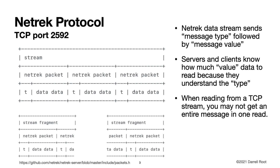When you are reading in a client or on the server — because the Nettrek information goes in both directions for the game to function — when you're reading from a TCP stream, you are not guaranteed to get an entire Nettrek packet at a time. For example, here we did a read and got enough bytes for the first Nettrek packet: we got the type and all of the data. For the second packet, we only got part of it in this read — the type and some of the data. Then the next read gives us the rest of that packet and the following complete Nettrek packet.